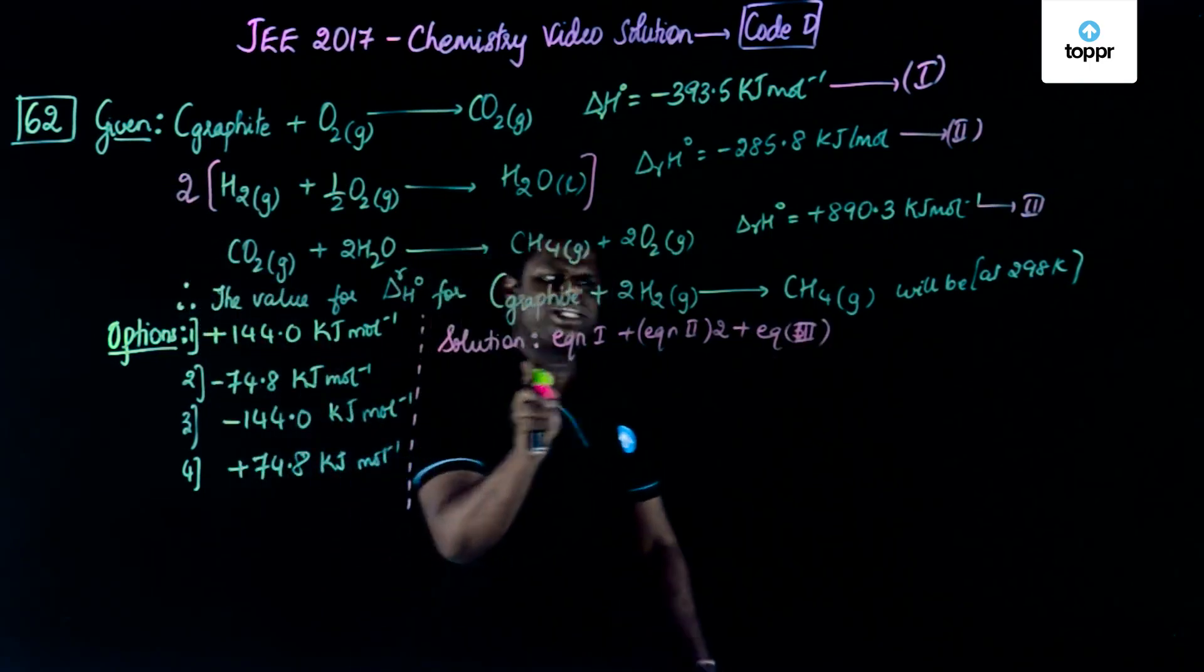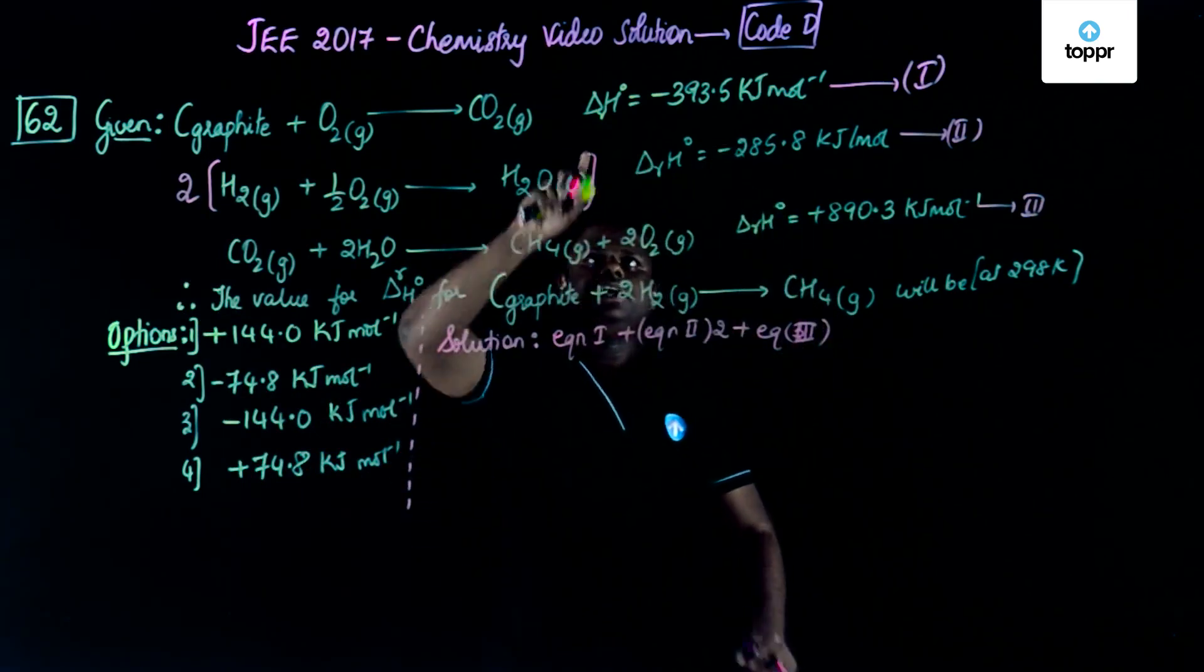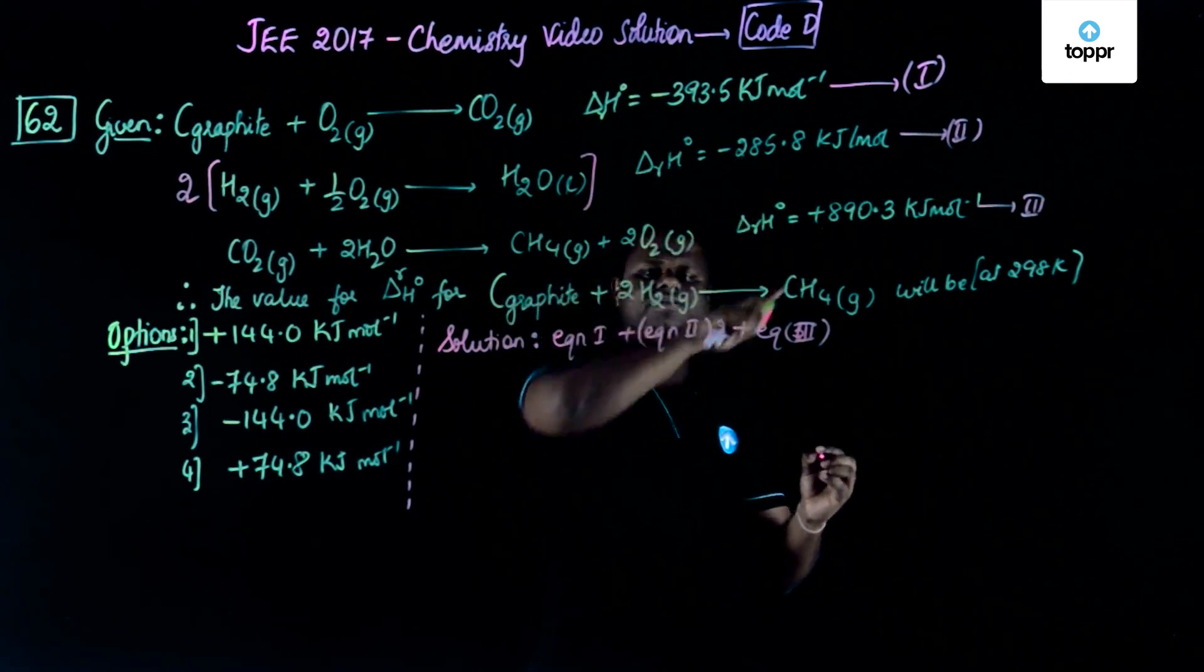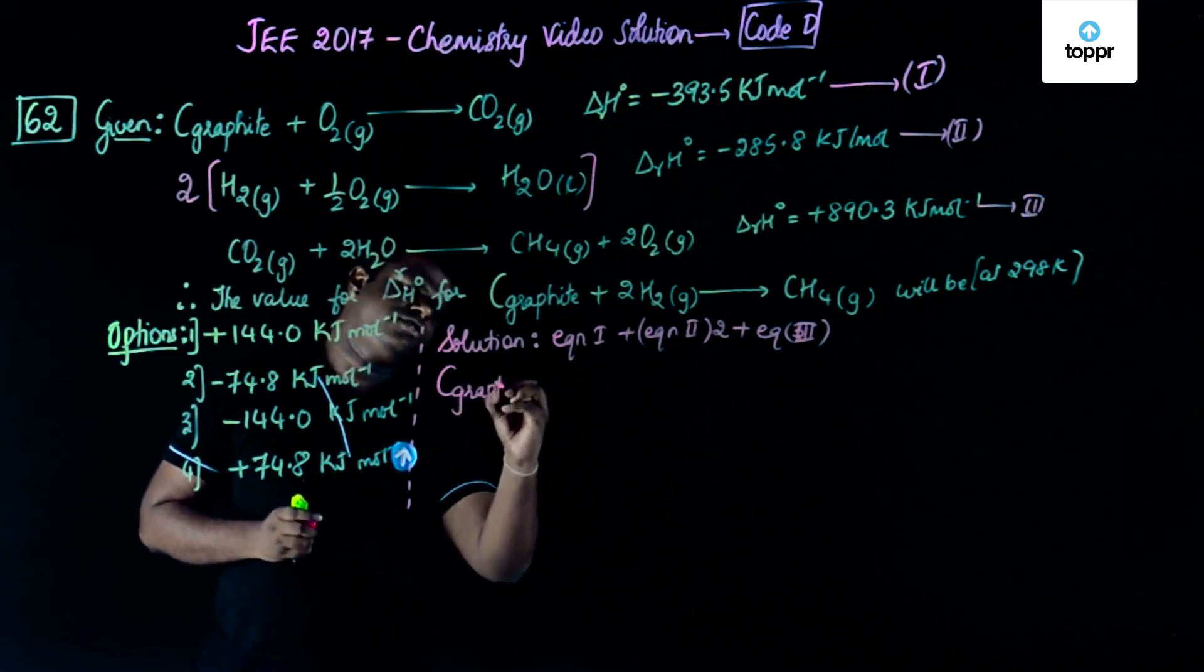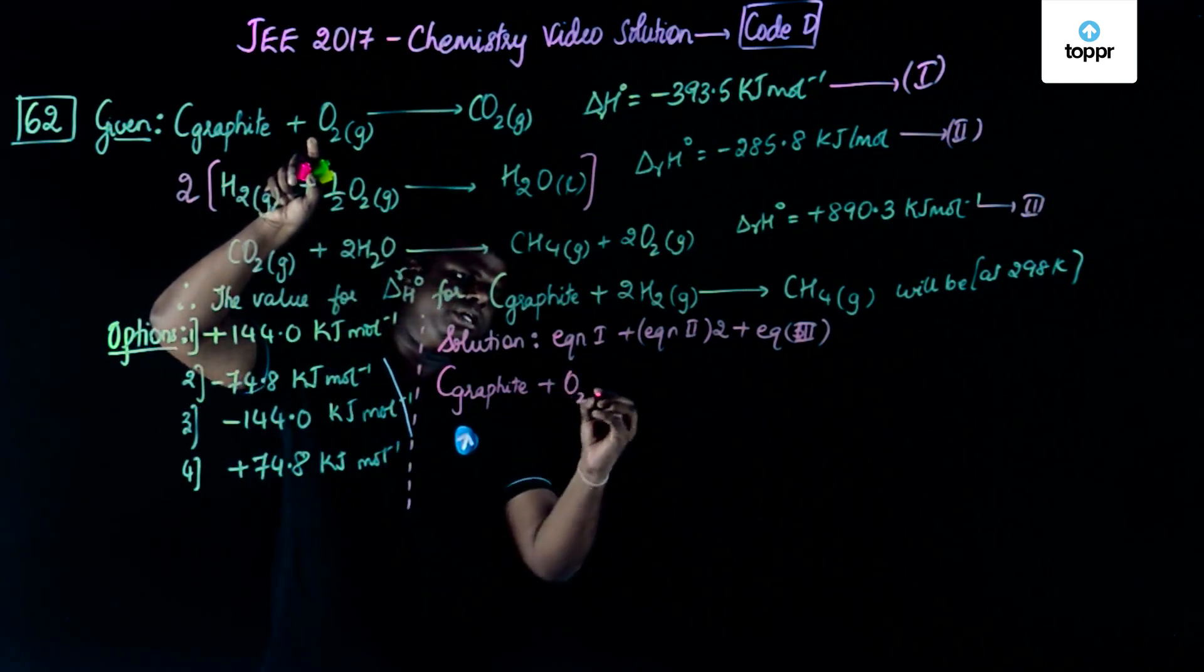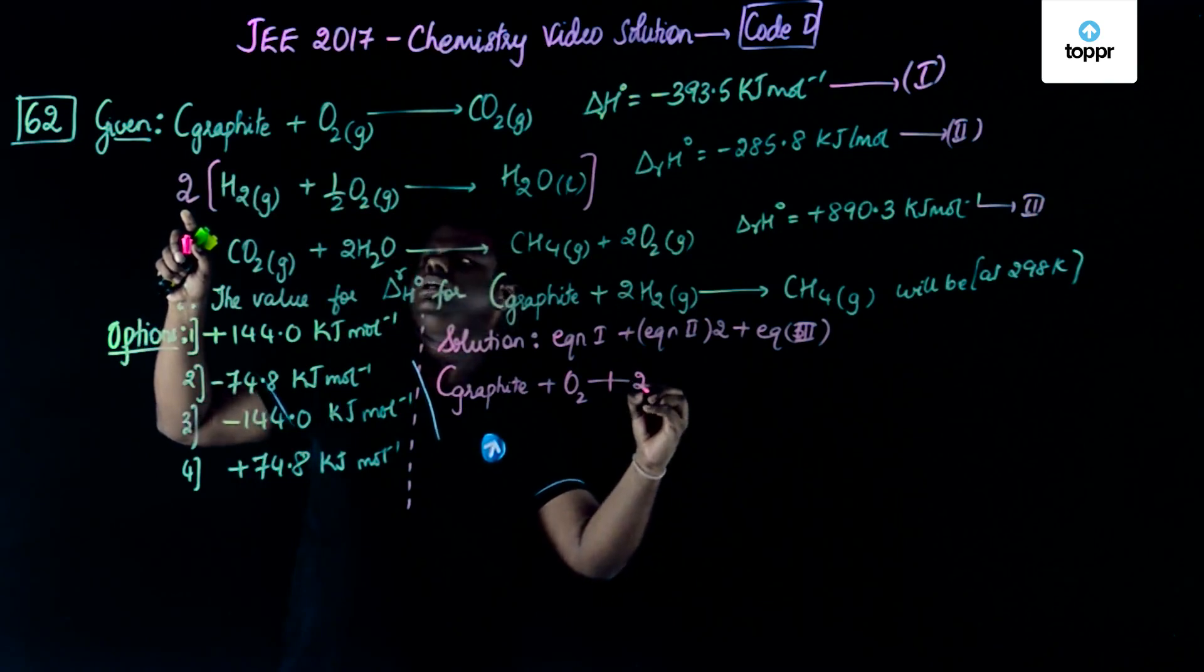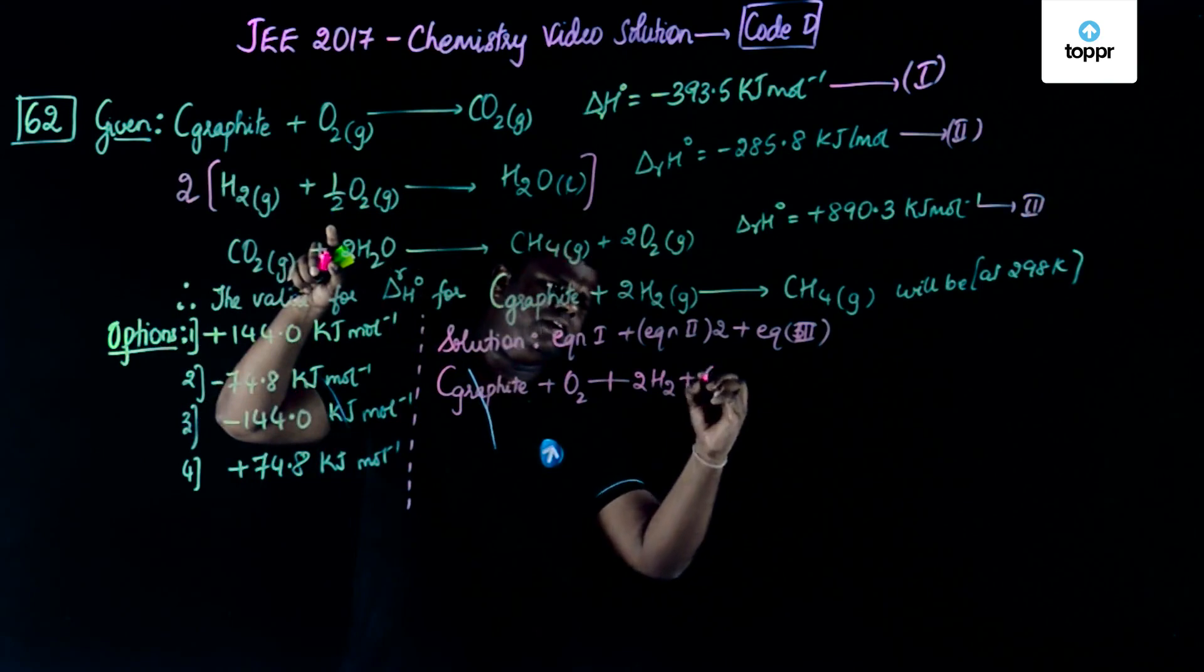So what exactly am I going to do here? I'm writing equation 1 plus equation 2 multiplied by 2 plus equation 3. I'm going to just add these and get a result, and similar things I have to do with the thermochemical equations as well. Let's try to first get the answer. I'm just going to write C graphite plus O2. Let's first write down everything together so we can cancel the common terms. Then I have multiplied 2 times this equation, so I'll be writing 2 into H2 plus 2 into half, that will become 1 O2.